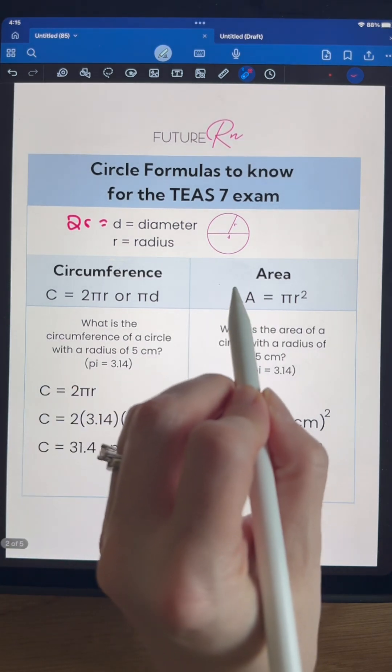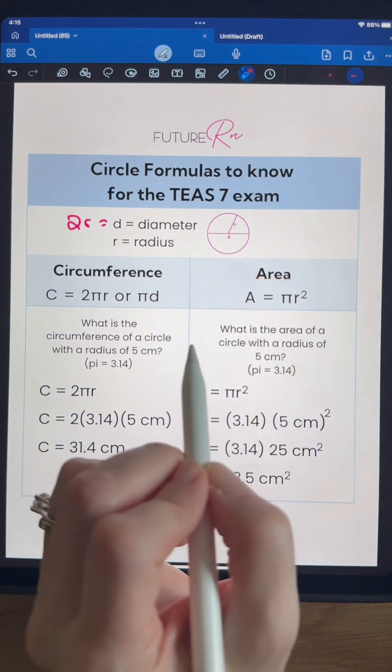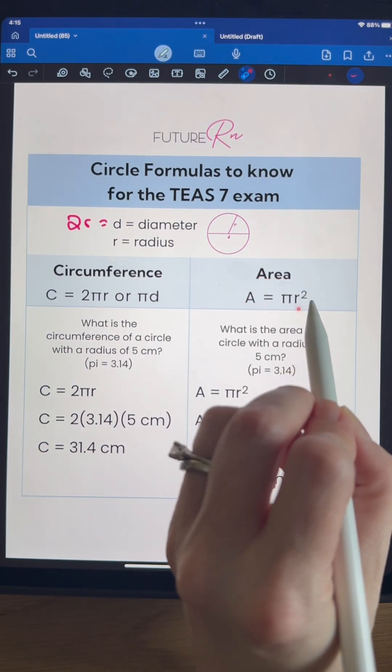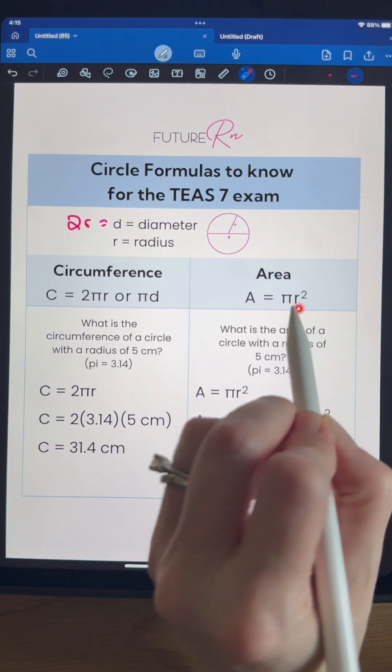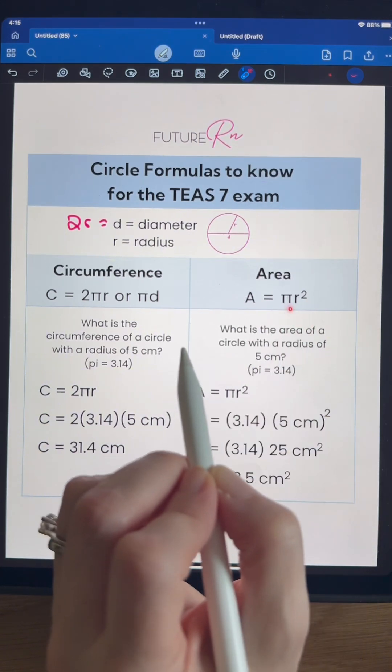The other one we need to know is the area equals pi times R squared. So R is the radius. This is squared, so you need to plug that in, square it, and then multiply times pi.